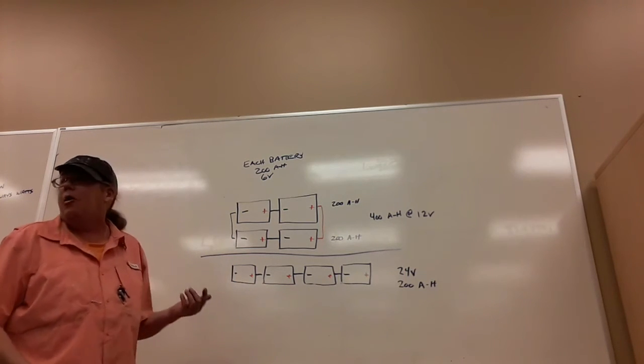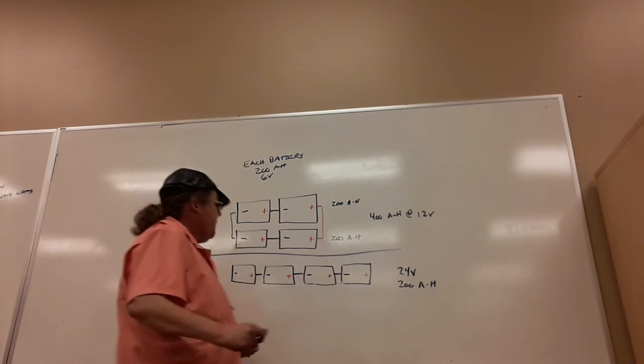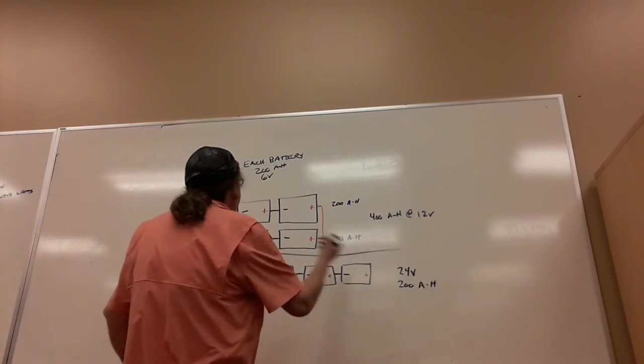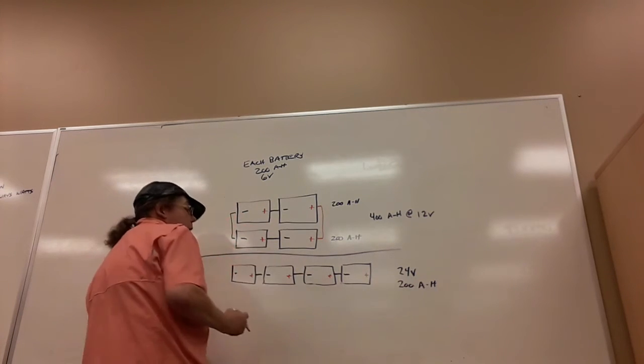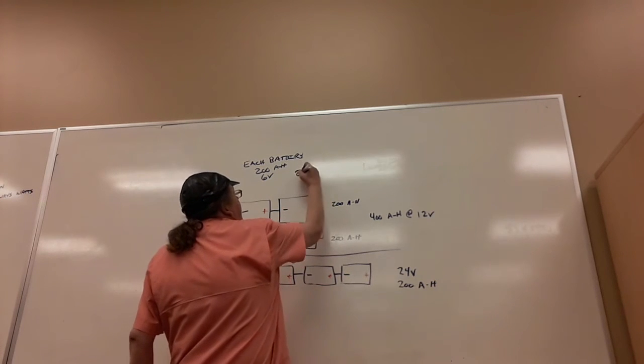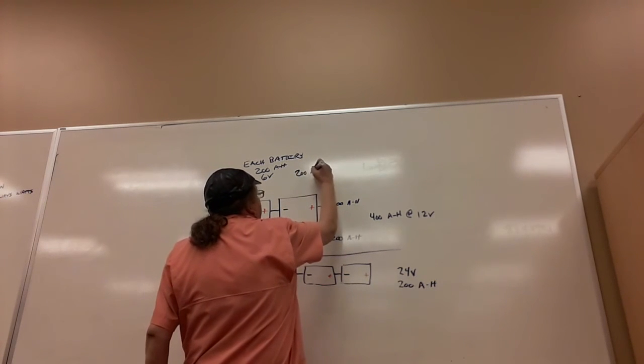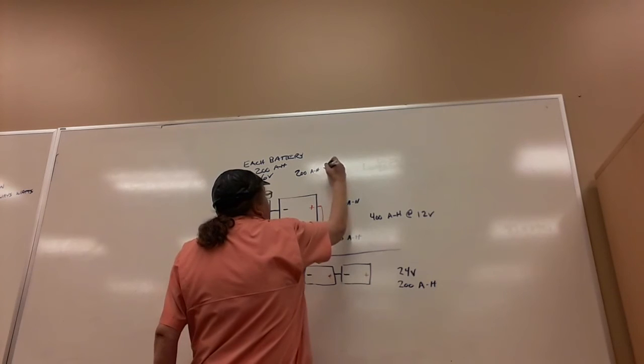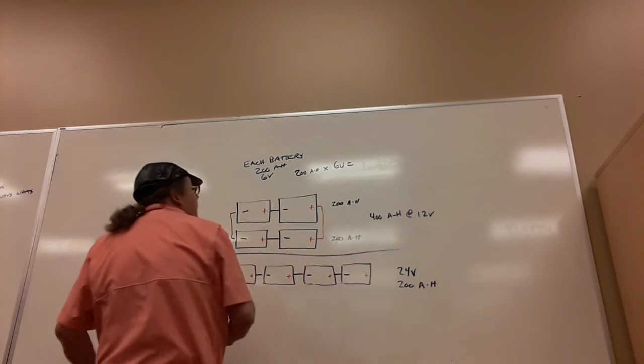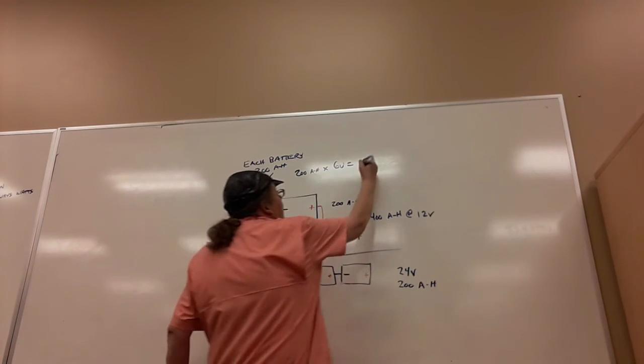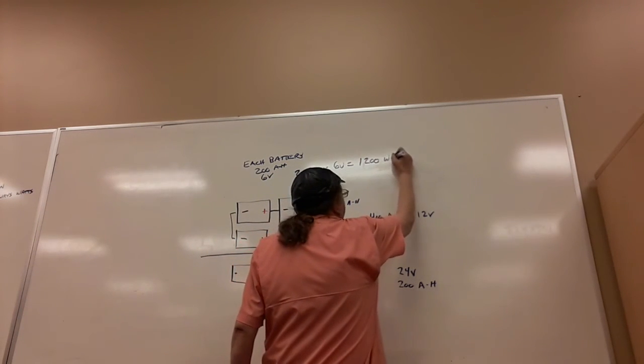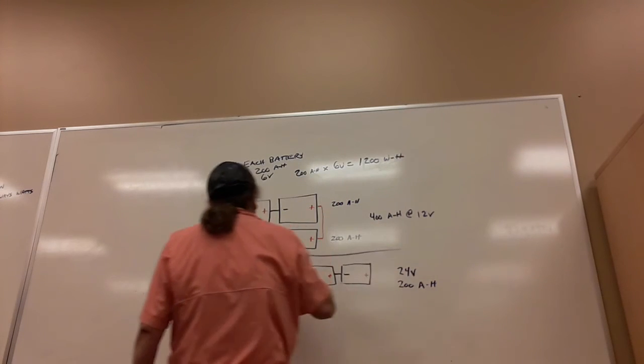So I got to explain watt hours. Each of these batteries, they both have four identical batteries, 200 amp hours at six volts. So 200 amp hours times six volts equals 1,200 watt hours for each battery.